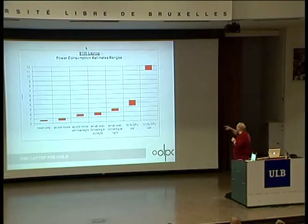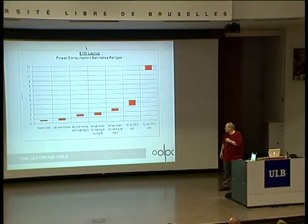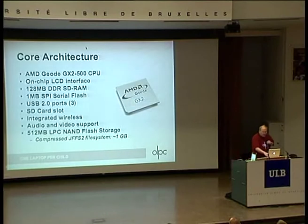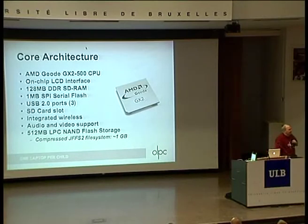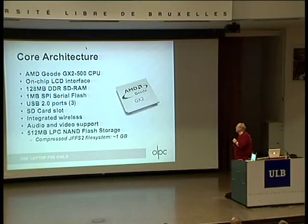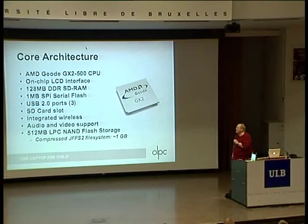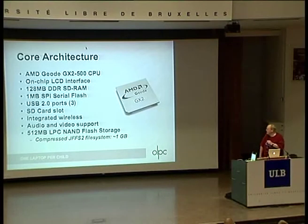The 12-watt worst case is if you have all three USB ports sucking as much power as possible. The more typical thing will be down at the lower end. It's not a very fast processor — it's sort of what we all had five or seven years ago, a Geode GX2. We have 128 megabytes of RAM. Thankfully, OpenOffice is not something you want to inflict on an eight-year-old anyway. There's a megabyte of serial flash for the firmware. There's an SD card slot, wireless, audio, and a camera. And half a gigabyte of NAND flash using Dave Woodhouse's JFFS2 filesystem, which does data compression — so for typical programs and data, it feels more like something about twice that size.